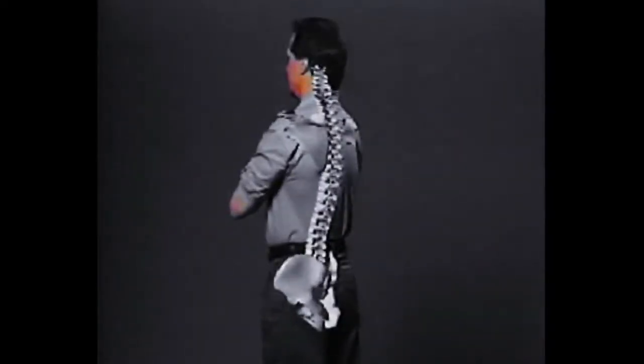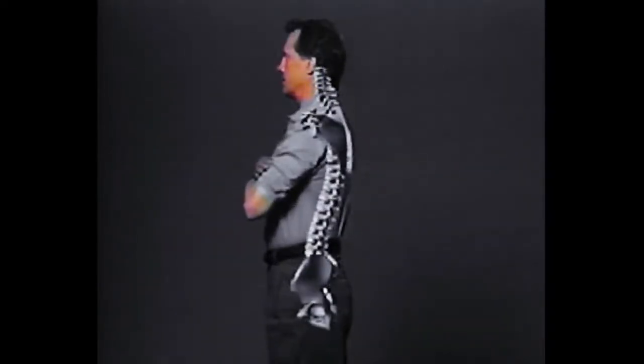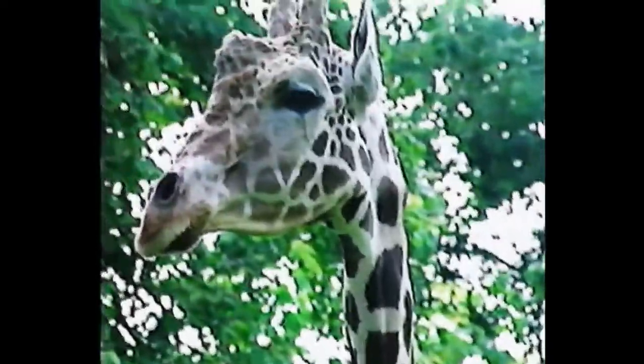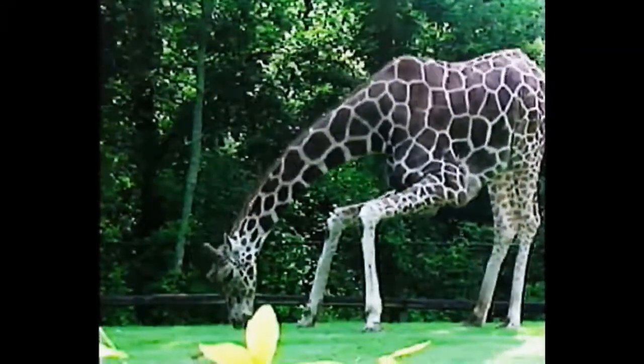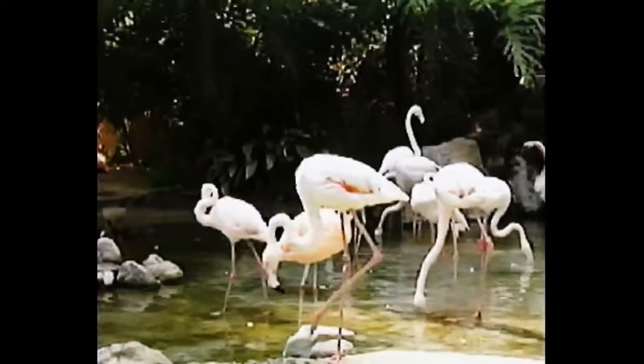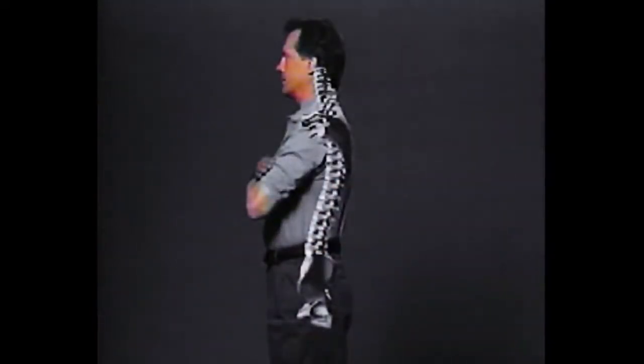Along with improper motion, there can also be a loss of proper curves. Proper spinal curves help support the weight of the body — for example, the neck should have a healthy forward curve. When the neck loses its normal curve, the ability to turn and bend can be reduced, often resulting in headaches, neck pain, or other symptoms. Interestingly, some animals like the giraffe do not have a curve in their neck, which severely impairs their ability to bend, while animals such as flamingos have multiple curves permitting an unusual range of motion and flexibility.